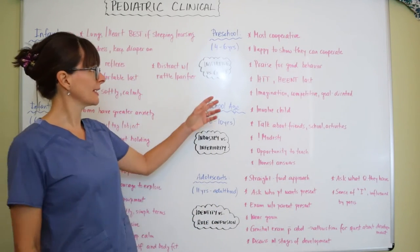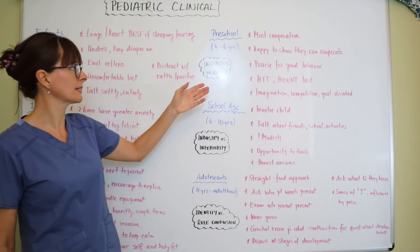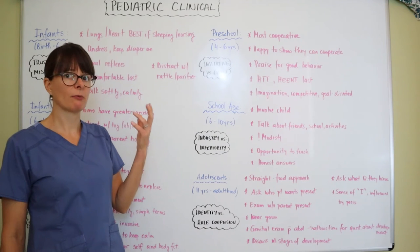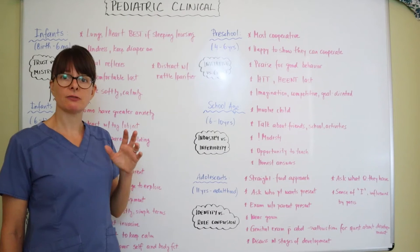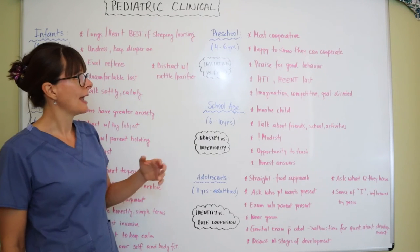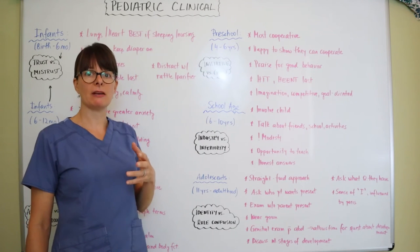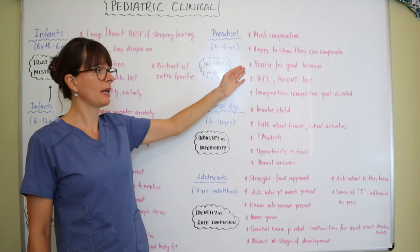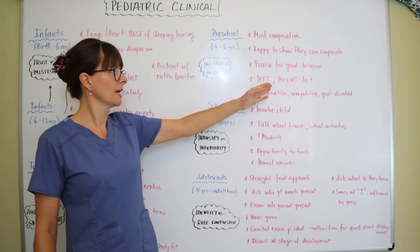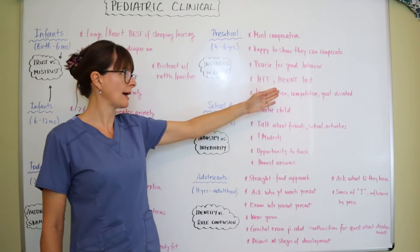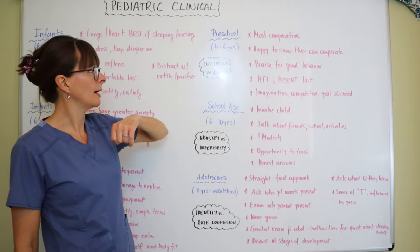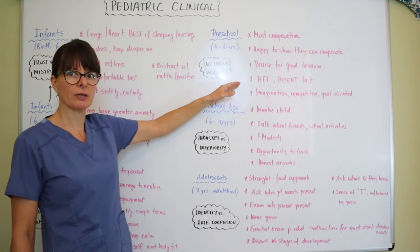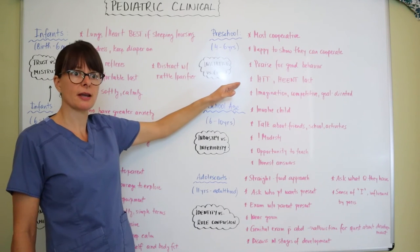Preschoolers, between four and six years old, are in the stage of initiative versus guilt and are pretty cooperative. They go into an imaginative phase, may have an imaginary friend, get a little competitive, and learn to play cooperatively with others. They are happy to show you they can cooperate. Getting them involved and giving them options and choices is a good way to approach them. Make sure to praise them for good behavior. Still keep the head, ears, eyes, nose, and throat for last as it might still be scary. Interact more with the child than the parent, but have the parent there in case they become shy.